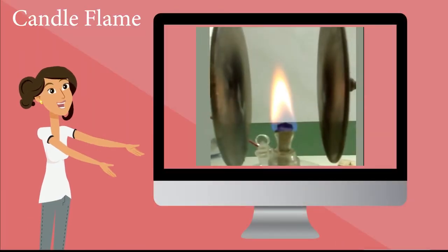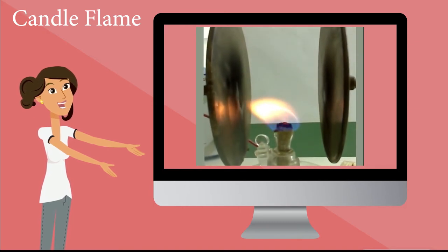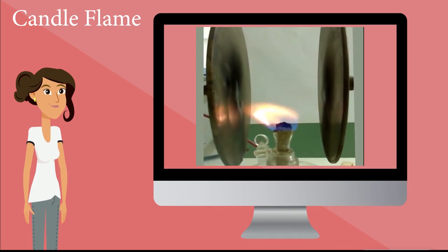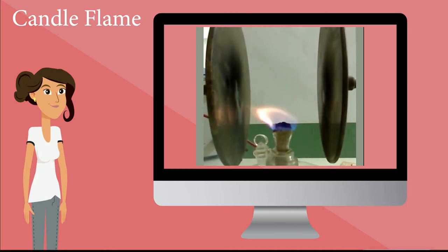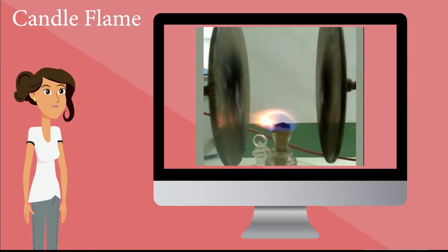Normally, with the absence of wind, the flame of a candle is symmetric. The heat of a candle flame removes electrons from the air molecules around it, and therefore ionizes the molecules. As a result, the flame is surrounded by a large number of positive and negative ions. If the candle is placed in between two plates connected to an extra-high tension power supply, the positive ions would be attracted to the negative plate, while the negative ions would be attracted to the positive plate.